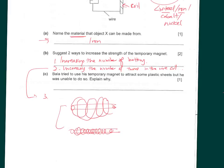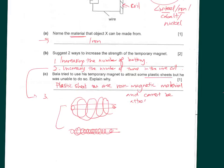Part C: Bala tried to use his temporary magnet to attract some plastic sheets but was unable to do so. Plastic sheets are non-magnetic material and cannot be attracted by a magnet.